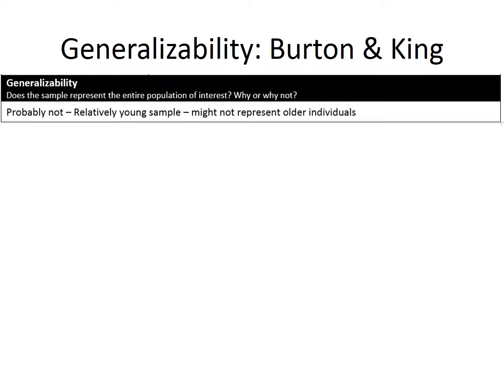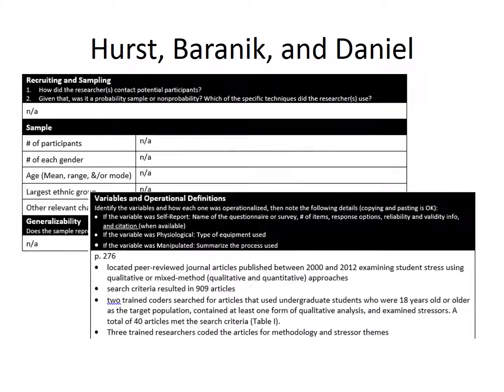You could include something like I have in this slide. The information about generalizing from the sample to population doesn't apply to the Hurst article because it was a content analysis, but we can think about whether the process they used for identifying the articles for analysis would allow them to identify the majority of the articles on the topic without having unrelated information.